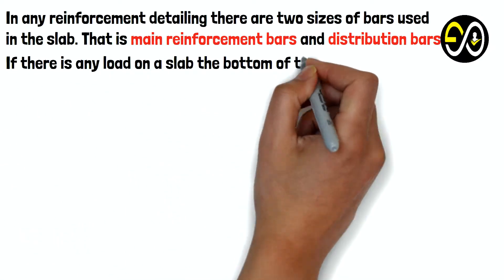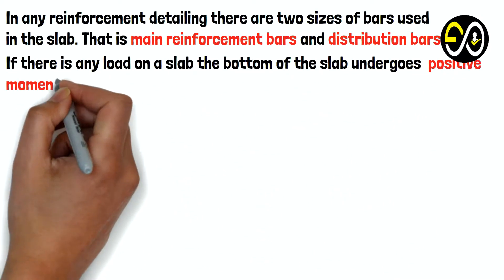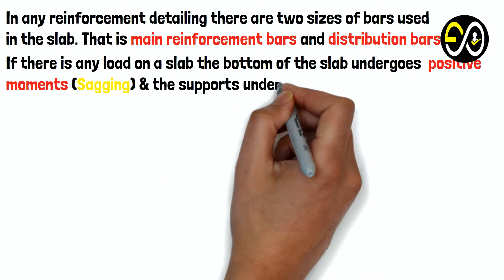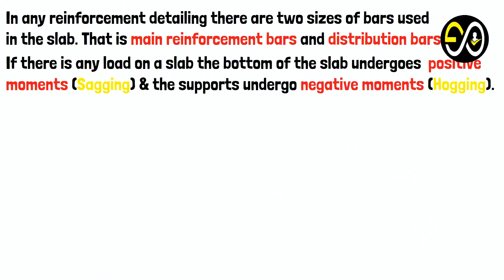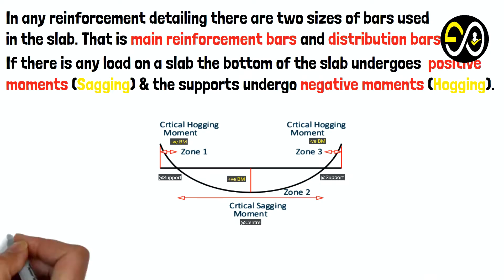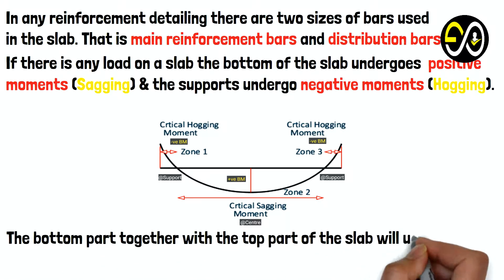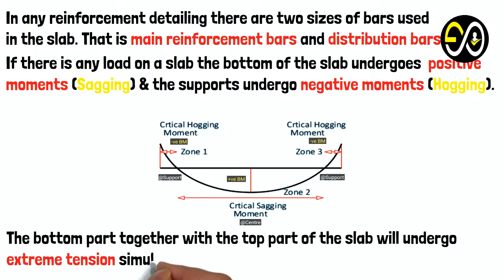If there is any load on a slab, the bottom of the slab undergoes positive moments (sagging) and the supports undergo negative moments (hogging). The bottom part together with the top part of the slab will undergo extreme tension simultaneously.